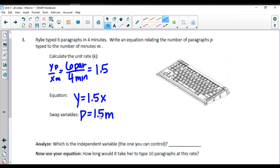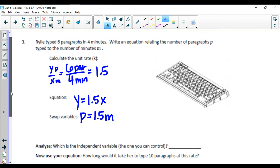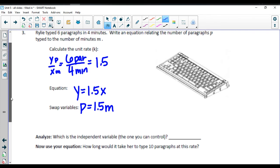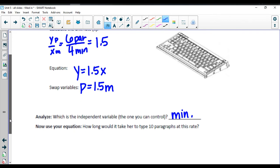So which one is the independent variable? We have paragraphs per minute. So our paragraphs depend on how many minutes we have. So the minutes is our independent variable, and our paragraphs is dependent.